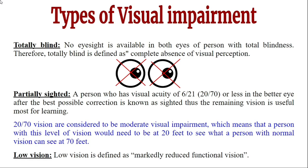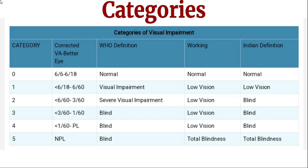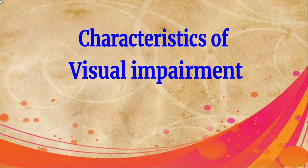The last type of visual impairment is low vision, defined as markedly reduced functional vision. A category chart lists six categories of visual impairment from zero to five. Corrected visual acuity for the better eye is denoted by different fractions. According to those fractions, the World Health Organization (WHO) defines different categories, which can be compared with the working eye definition and the Indian definition of visual impairment.